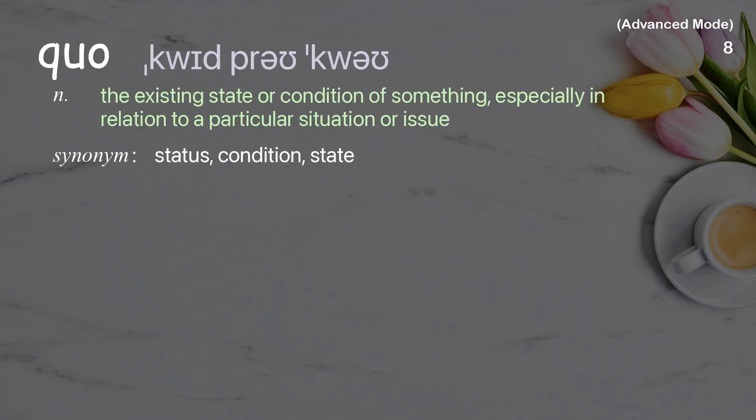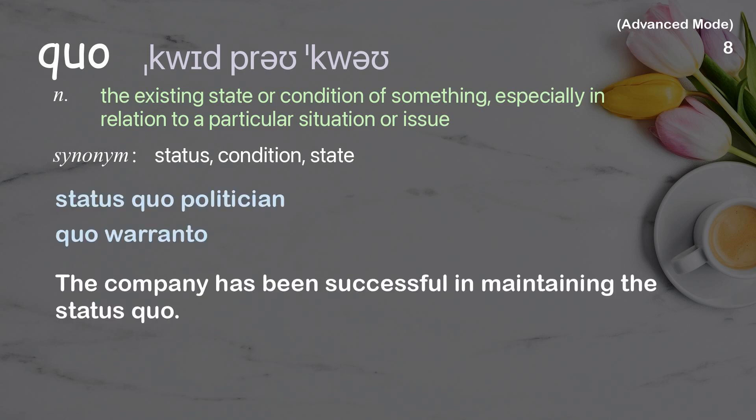Quo: the existing state or condition of something, especially in relation to a particular situation or issue. Examples: status quo politician, quo warranto. The company has been successful in maintaining the status quo.